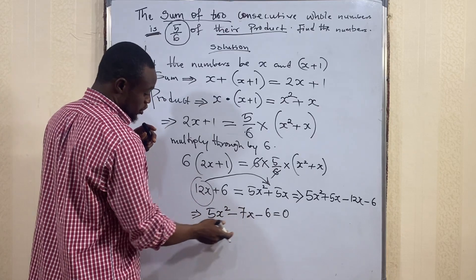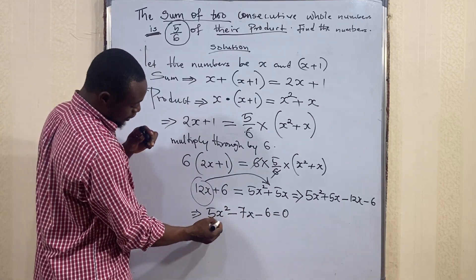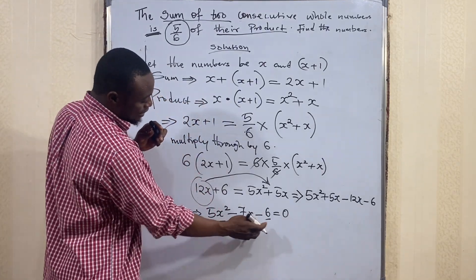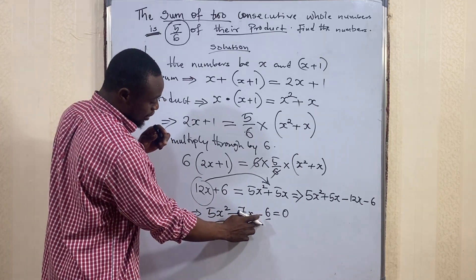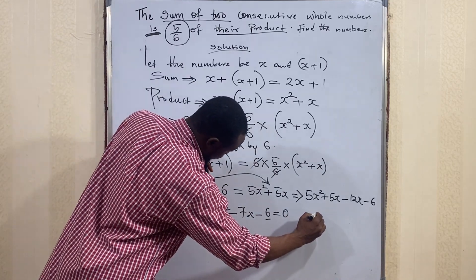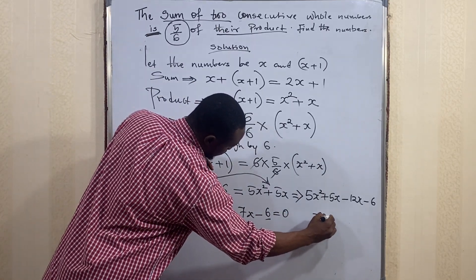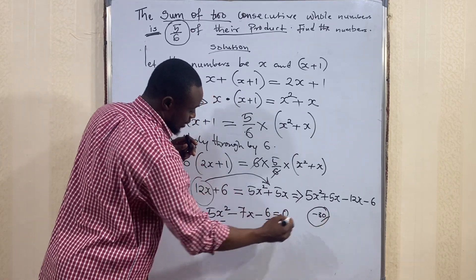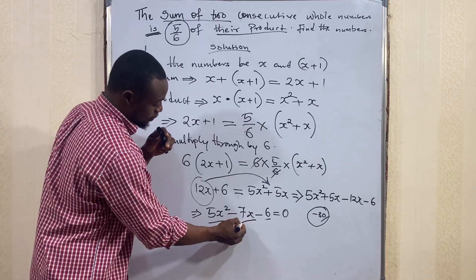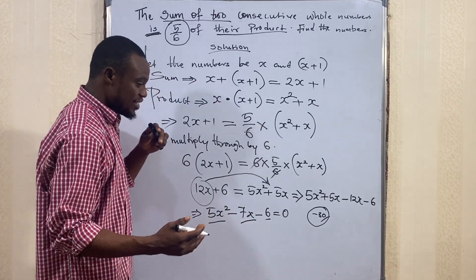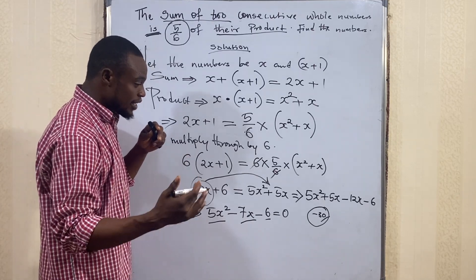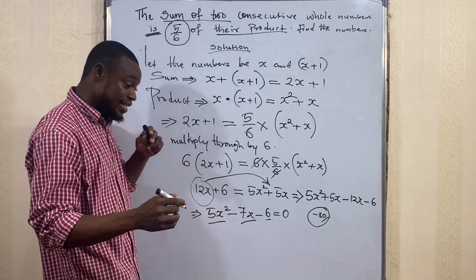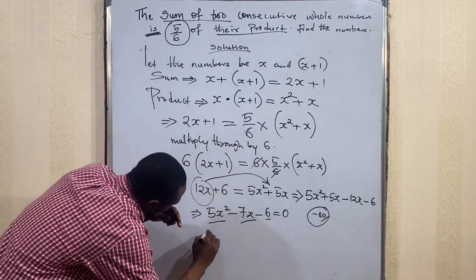Now we factorize the quadratic 5x² − 7x − 6 = 0. The first term has coefficient 5 and the constant is −6, so we multiply 5 × 6 = 30, giving us −30. We need factors of 30 that subtract to give 7: those are 3 and 10, since 10 − 3 = 7. Because we have −7, we use −10 and +3.